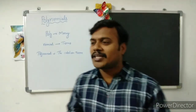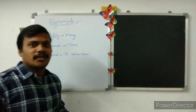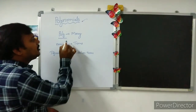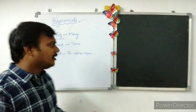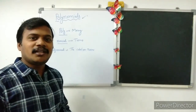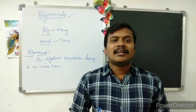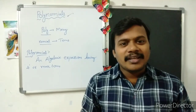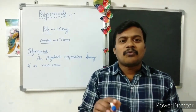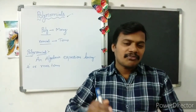Today we are going to discuss polynomials. What does polynomial mean? Poly means many, and nomial means terms. So polynomial means many terms. The fundamental definition of polynomial is an algebraic expression having four or more terms.